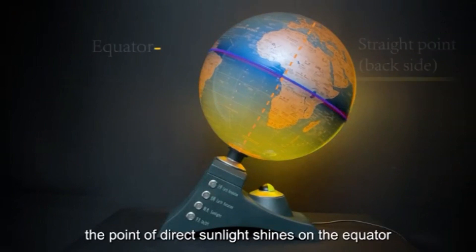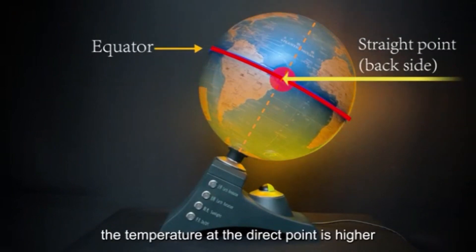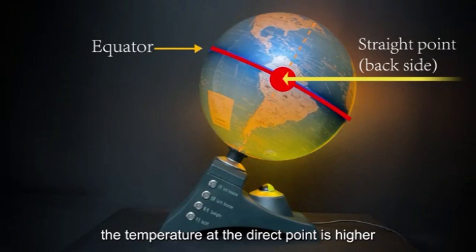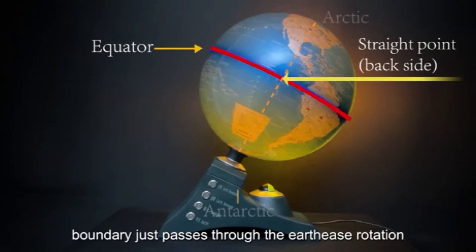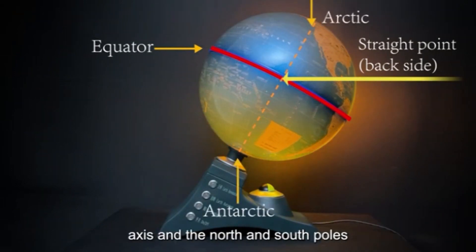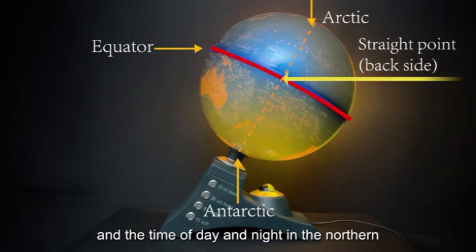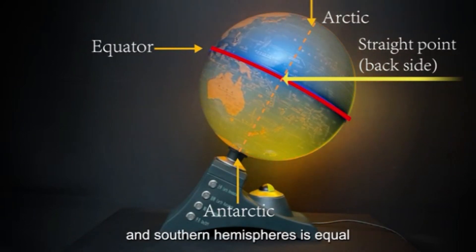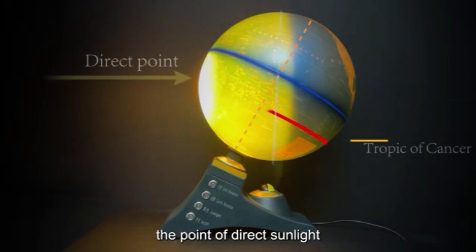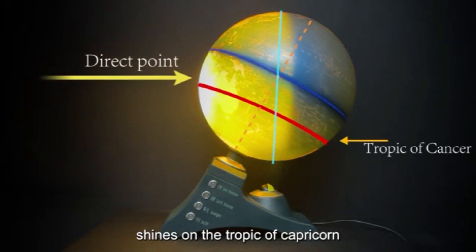Autumn Equinox: The point of direct sunlight shines on the equator, and the temperature at the direct point is higher. The day-night boundary just passes through the Earth's rotation axis and the north and south poles, and the time of day and night in the northern and southern hemispheres is equal. Winter Solstice: The point of direct sunlight shines on the Tropic of Capricorn.